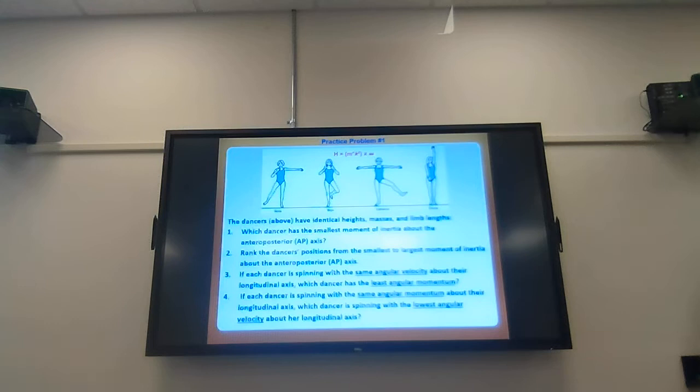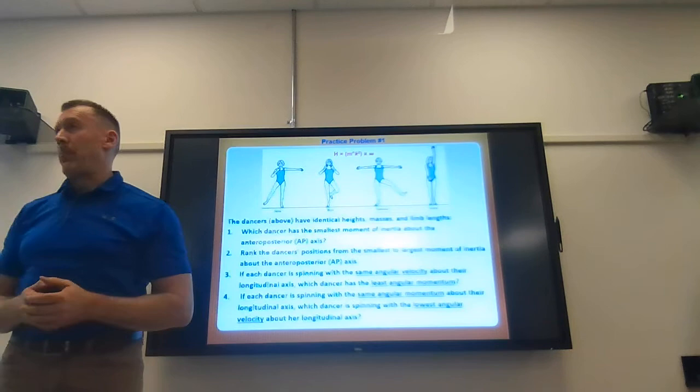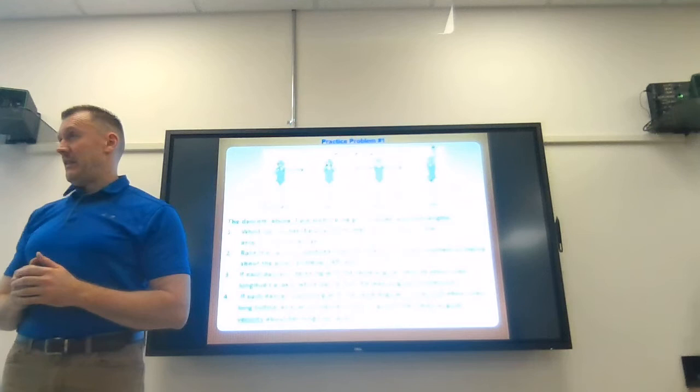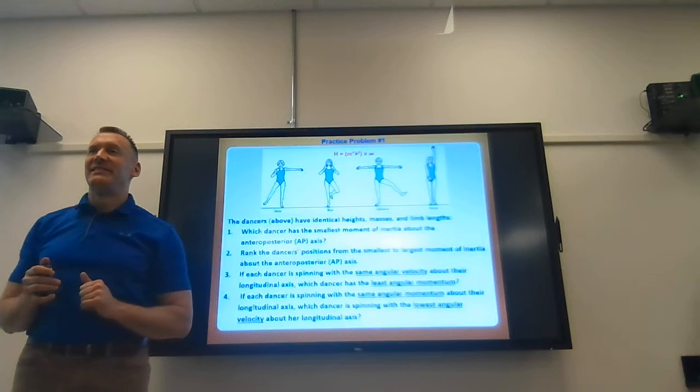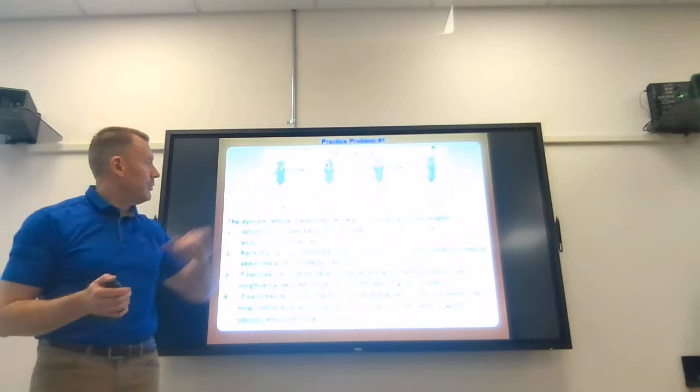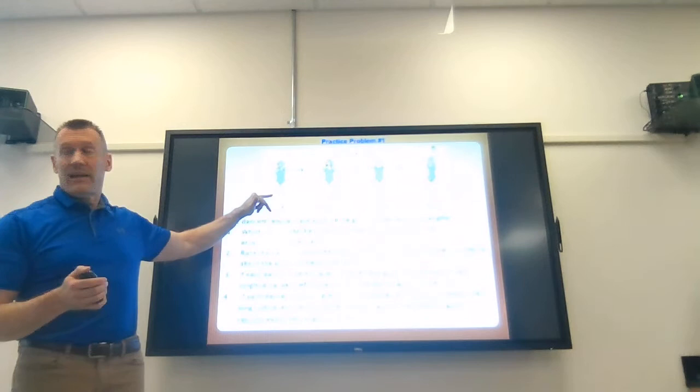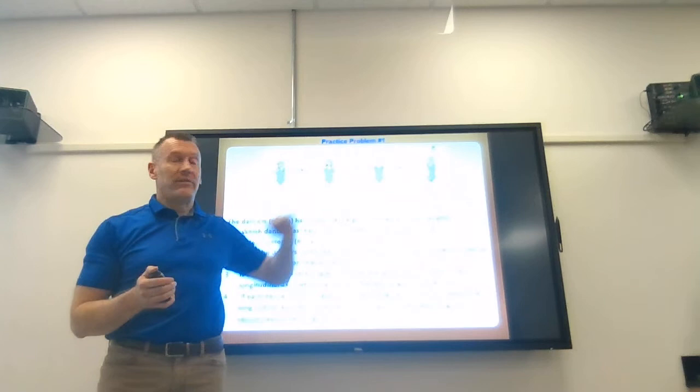Let's get back together. Question one - who has the tightest distribution of mass about the center of their body? Donna would be a good candidate. Next would be Bryn, then Anna, and the largest moment of inertia would be Catherine. Now let's say they're all spinning with the same angular velocity. Because they have different moments of inertia, they don't have the same angular momentum - but they can have the same rate of spin. The one with the largest moment of inertia is going to have the highest angular momentum.